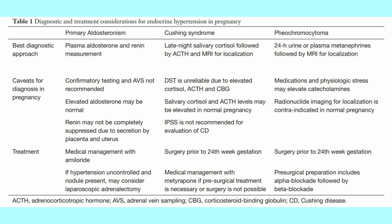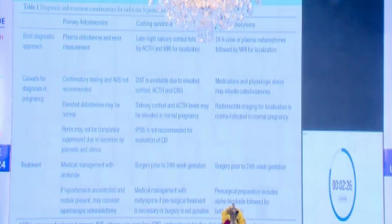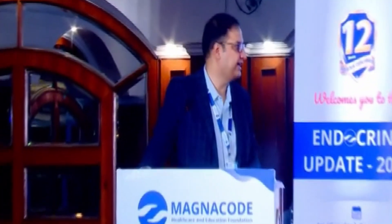For treatment: hypertension must be well treated in all three entities. In primary aldosteronism, amiloride is the drug of choice — a thiazide-like diuretic that spares potassium. In Cushing's syndrome, metyrapone is used — an enzyme blocker causing less cortisol production from the adrenals. For pheochromocytoma, pre-surgical preparation uses alpha blockade followed by beta blockade. Labetalol, although a combination alpha and beta blocker, is not a good choice as it can cause rebound hypertension in pheochromocytoma. If diagnosed before 24 weeks of pregnancy, surgery is the treatment for all three entities.